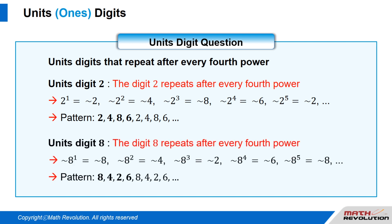Units digit 8: the digit 8 repeats after every fourth power. That is, 8 to the power of 1 equals 8, 8 to the power of 2 equals 4, 8 to the power of 3 equals 2, 8 to the power of 4 equals 6, and 8 to the power of 5 equals 8, and so on. Thus, the pattern is 8, 4, 2, 6, 8, 4, 2, 6, and so on.